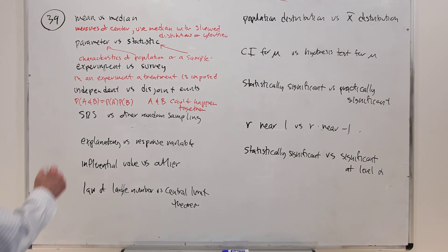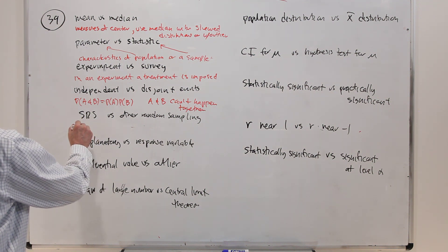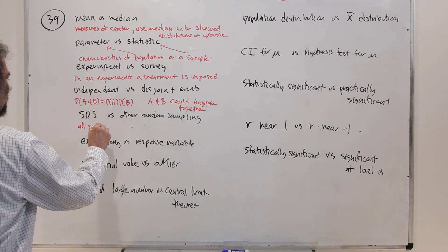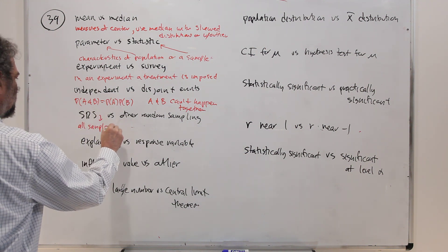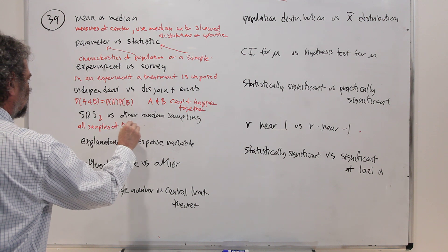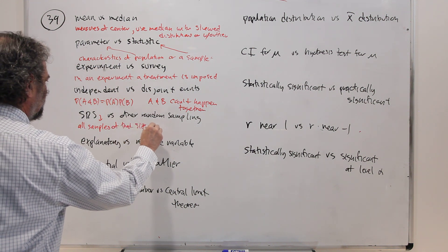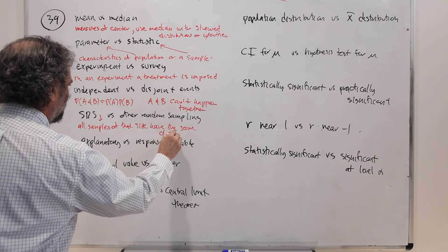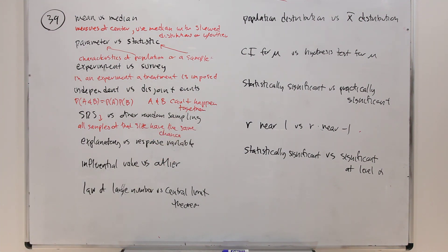Simple random sampling. We said that on the previous slide, all samples of that size have the same chance. Other kinds of random sampling often try to make sure each individual has the same chance, but they don't necessarily make sure all samples of that size have the same chance.